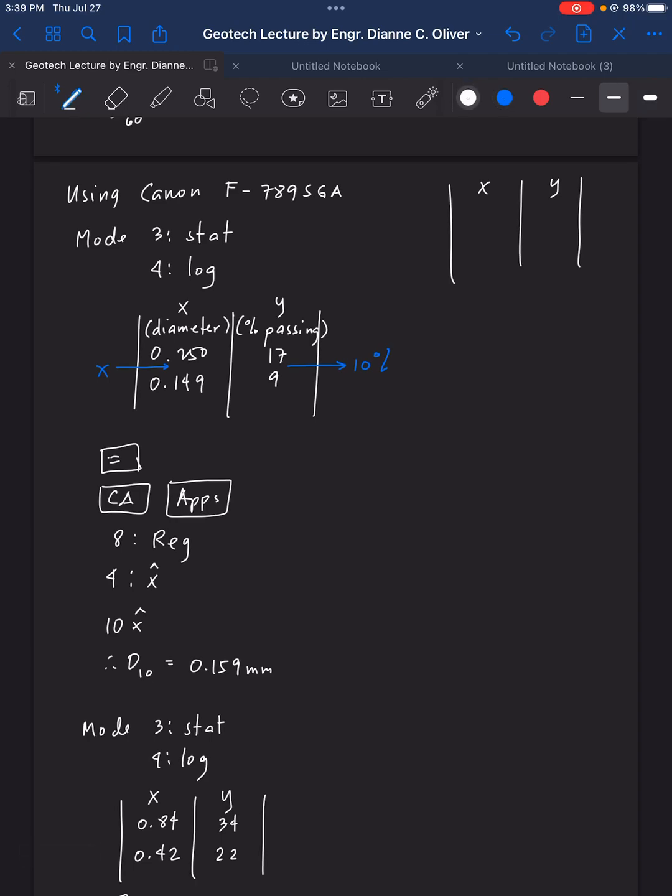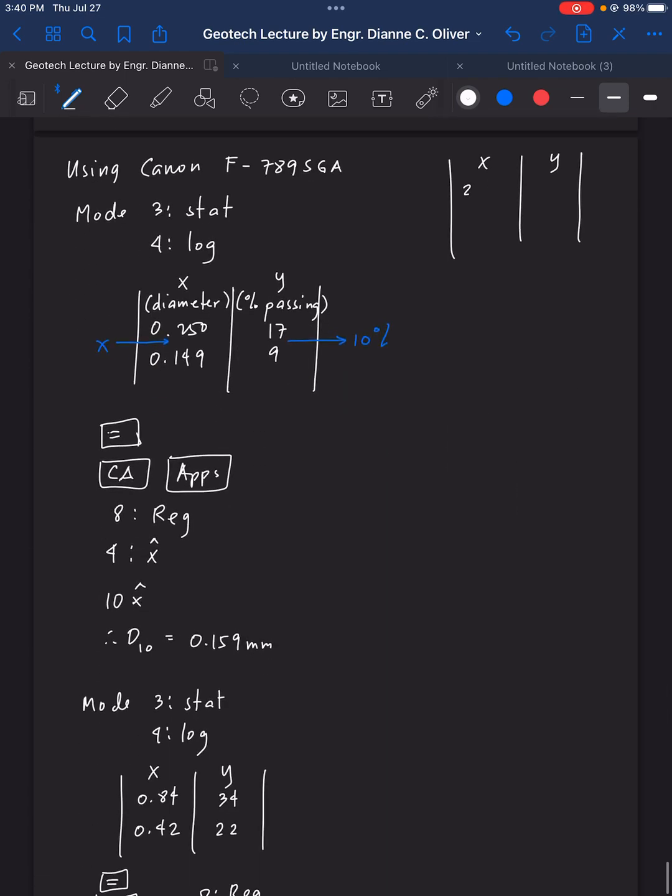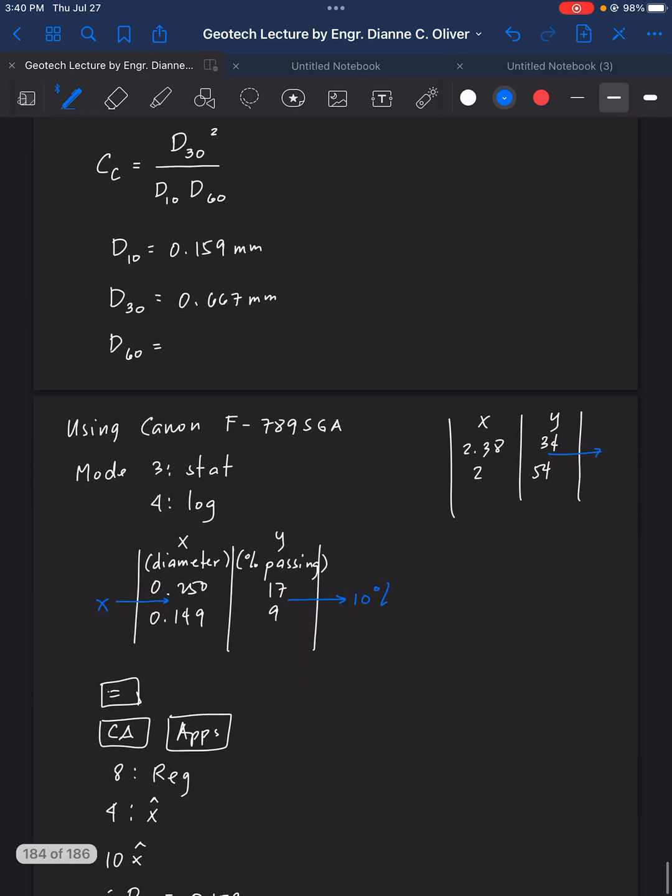2.38. That is 2.38, 2.38 equals sign. And then, 2 equals, we have there, 34 equals, and then 54. Yes, the, yeah, the 30%, no, it's 60%, sorry. It should be 64. It's not 34, it's 64.